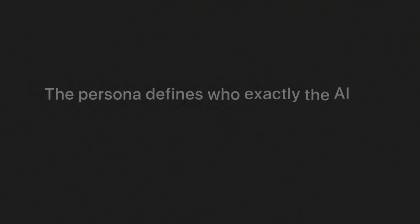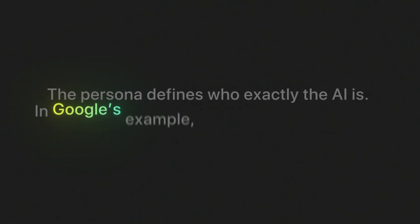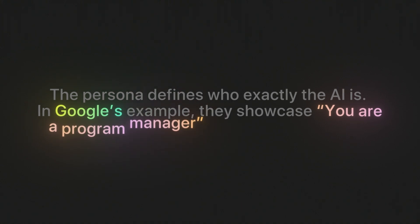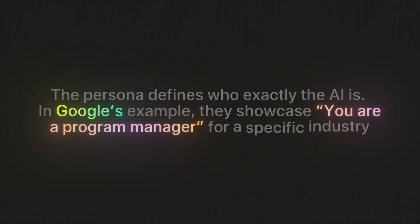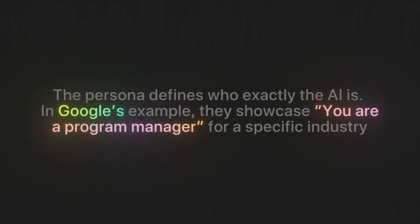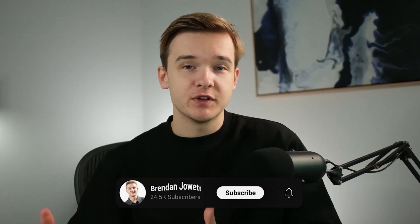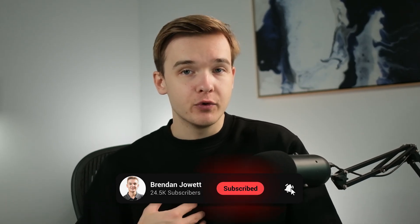The persona defines who exactly the AI is. In Google's example, they showcase: 'you are a program manager for a specific industry.' This just helps the AI have complete conviction in who it is and why it's doing what it's doing. We create personas for every agent that we build within our agency, as we've found it makes quite an impact on that agent's ability to follow through with any tasks given.